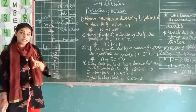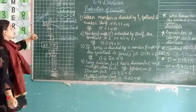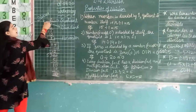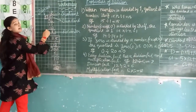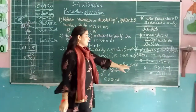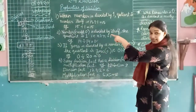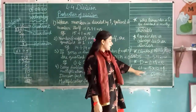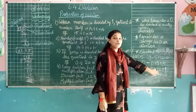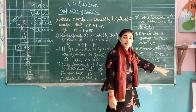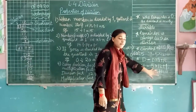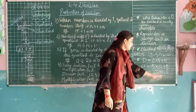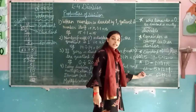When the remainder is not 0, then the dividend is equal to divisor multiplied by quotient plus remainder. For example, 61 divided by 5: the quotient is 12 and the remainder is 1. So 5 times 12 is 60, plus 1 equals 61. This confirms our dividend.